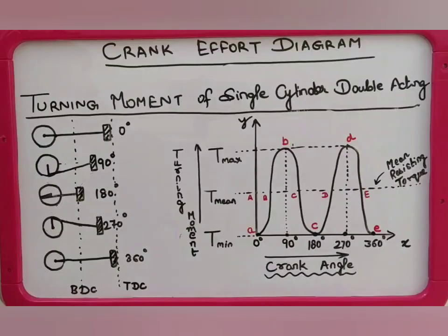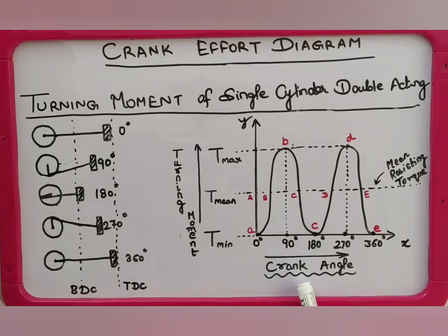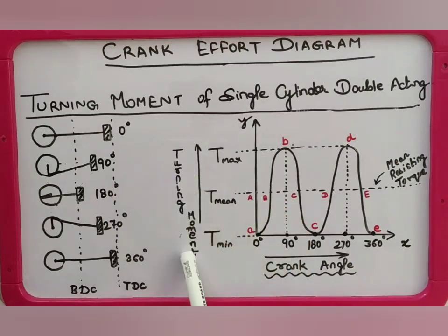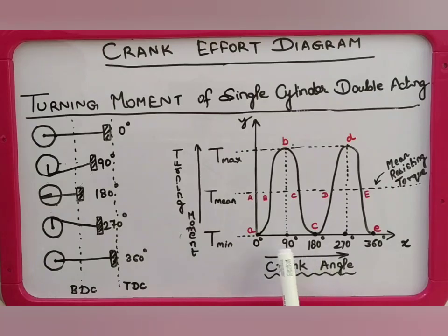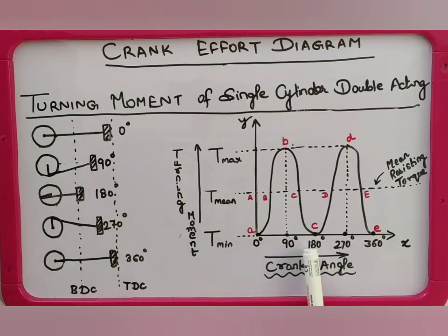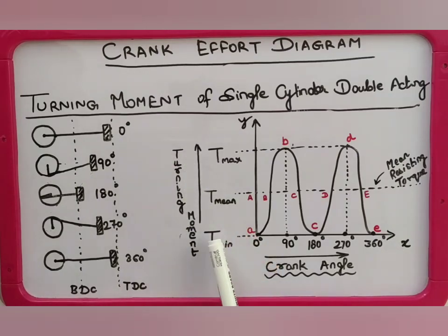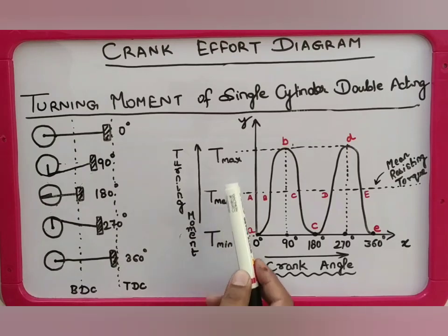Here in this diagram you can see that the X axis denotes the crank angle and on the Y axis we have the turning movement. On the crank angle we have the different positions of the crank: 0 degrees, 90 degrees, 180, 270, and 360. Correspondingly on the turning movement axis we have three positions: T minimum, T mean, and T max.